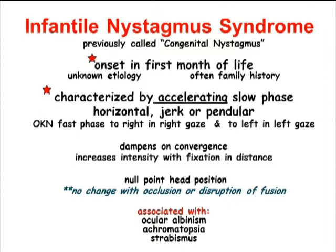Another hallmark of infantile nystagmus syndrome is that it is characterized by an accelerating slow phase of the horizontal jerk or pendular nystagmus. The OKN fast phase is to the right in right gaze and to the left in left gaze. It also dampens on convergence and increases in intensity with fixation in the distance. These patients often exhibit a null point head position, and the nystagmus does not change with occlusion or disruption of fusion.